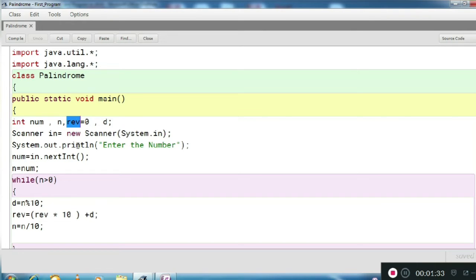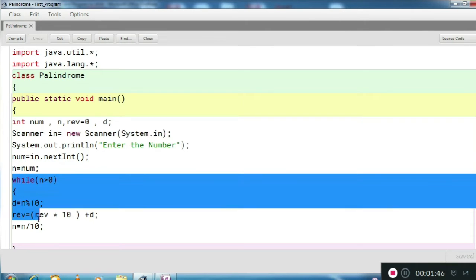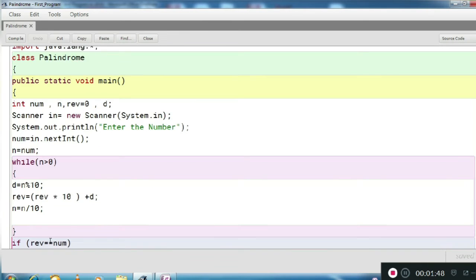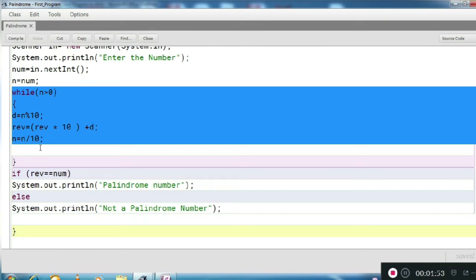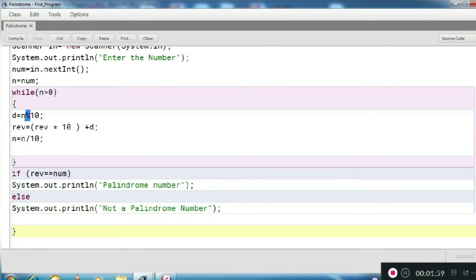Here we are asking the user to enter the number and num is having the entered number and n is to backup that number. So here is the logic to calculate the reverse of the number. While n greater than 0, we will capture the modulus and calculate reverse. Let's see.